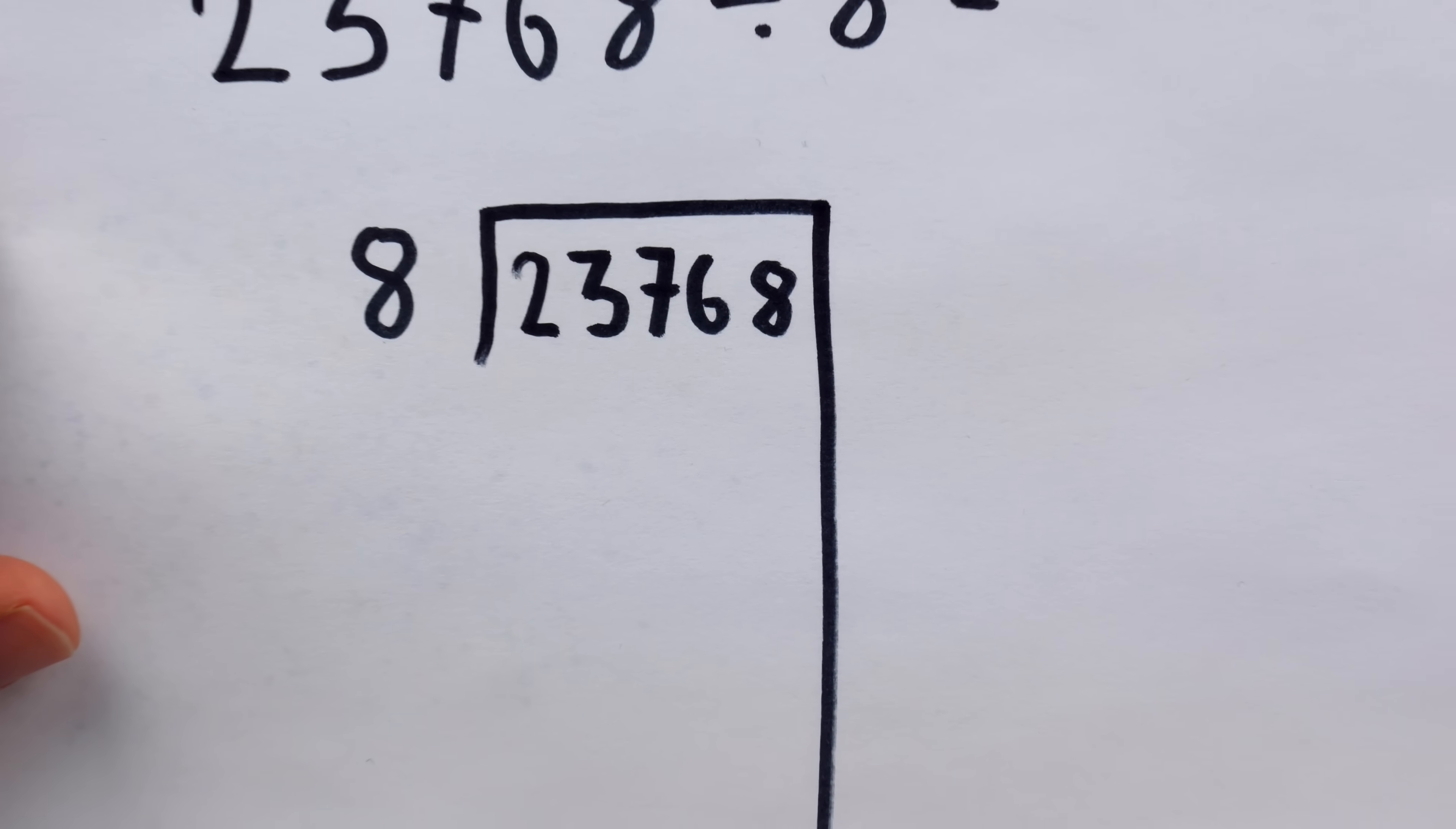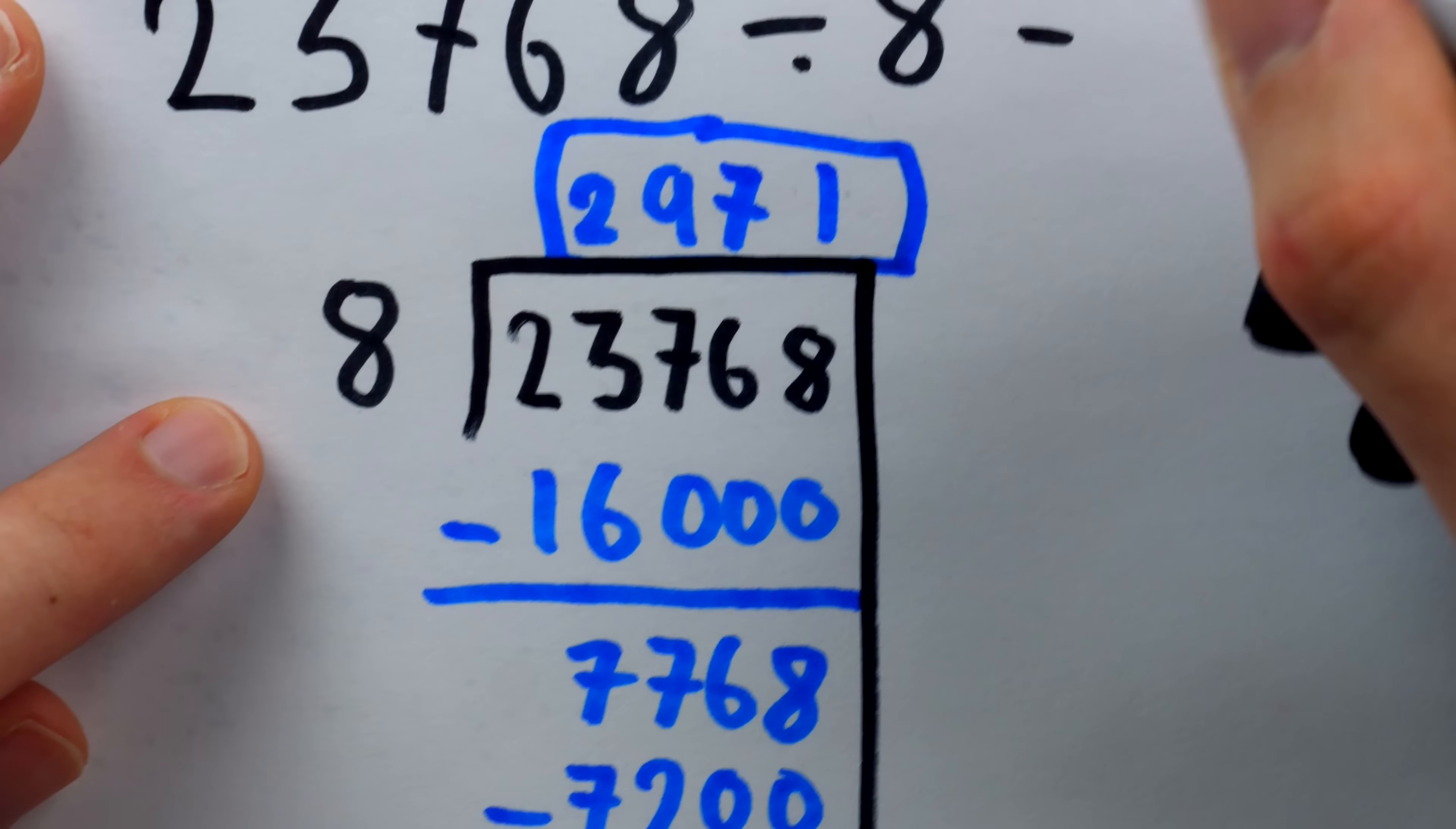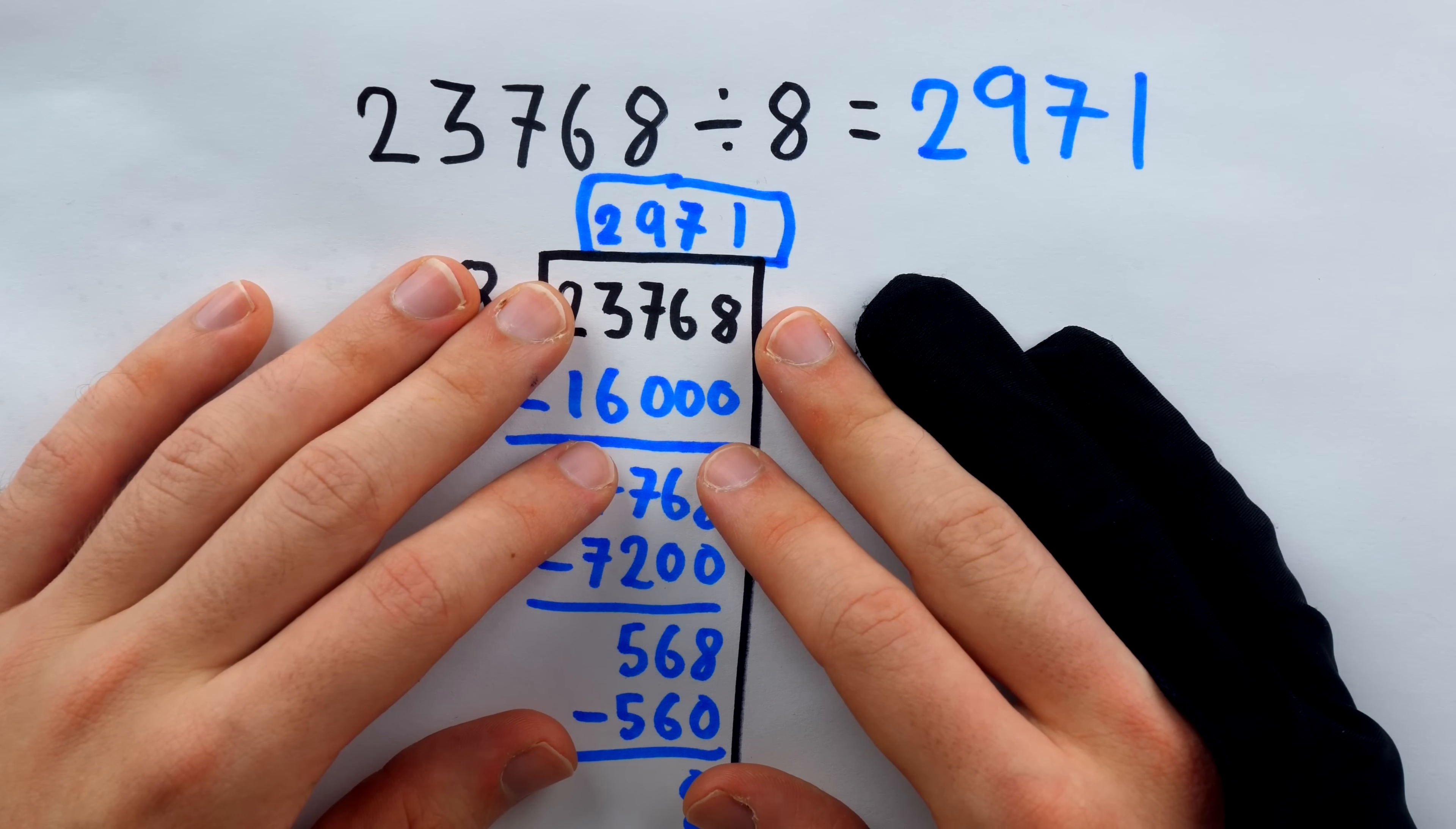So to do 23,768 divided by 8. So the result of the division is 2,971. So that's a little bit of long division. This is actually not how I was taught to do division in school. I was taught how to do division using, I guess what's called the chunking method. And perhaps I'll make a video on that sometime if I can think of anything interesting to say about it.